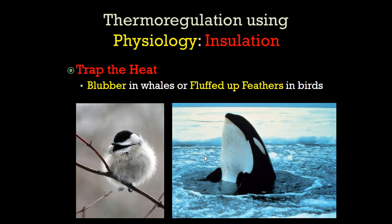Physiologically, a chickadee can survive winter by fluffing itself up, creating a warm layer of trapped air — just like a down coat. That's why we use goose down in coats. Alternatively, you could have a thick layer of fat with blood vessels — blubber — to insulate you, holding heat inside and saving the energy you worked hard for.